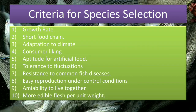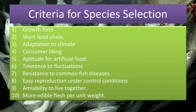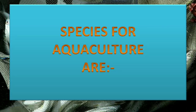Tenth is more edible flesh per unit weight. Species which give more flesh per unit weight are more economical and should be selected. These are all the criteria we should consider while selecting species for aquaculture.